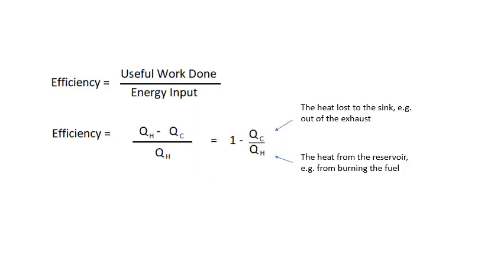This expression here is for the efficiency of a heat engine. Now, remember that efficiency is useful divided by total or useful divided by input. So the useful work done, I've already said, is QH minus QC. The energy input is QH. If we divide through by QH, that gives us one minus QC over QH.